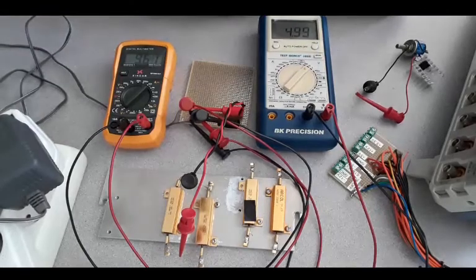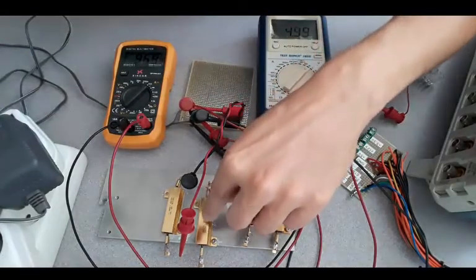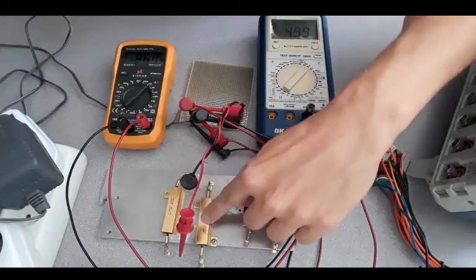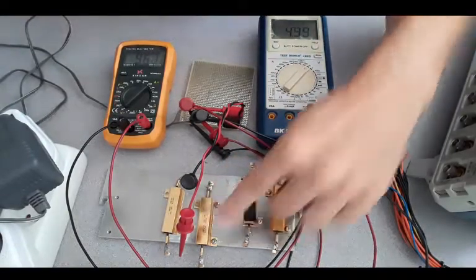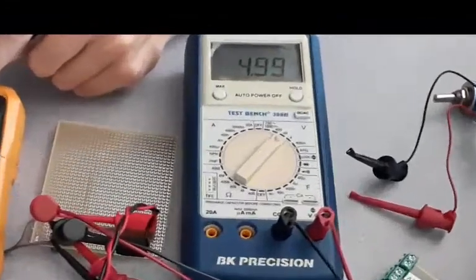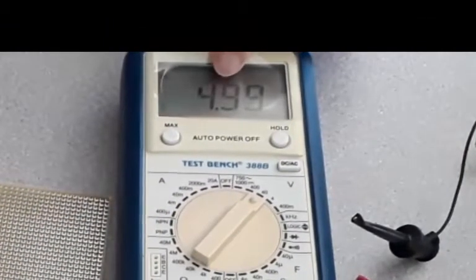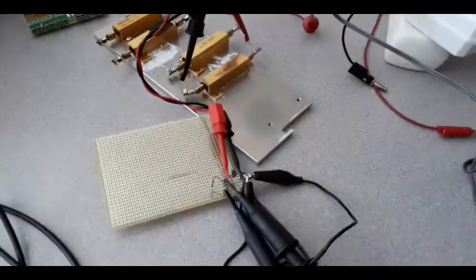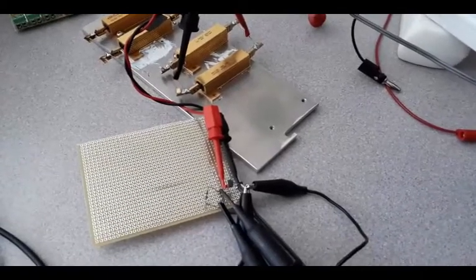The next test I'm going to do is to apply a load and show that this regulator still maintains the output voltage under load. Here's the same circuit, but now it's loaded by 75 ohms. That's two 150 ohm power resistors placed in parallel. See the input voltage has dropped a little bit, but the output voltage is still maintained.